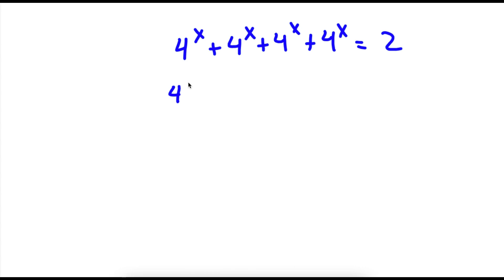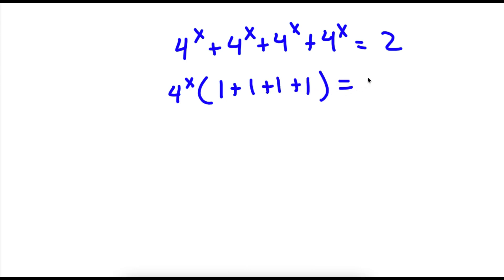Now the first thing I'm going to do is factor out 4 to the power of x. So now I have 4 to the power of x times 1 plus 1 plus 1 plus 1 is equal to 2. Now I'm going to simplify what's in the parentheses. So I have 4 to the power of x times 4 is equal to 2.